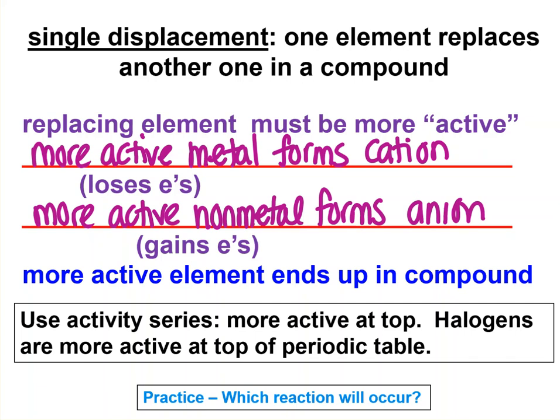And normally, the anion and cation that are formed are in a compound. So how do we know which element is more active? Well, it's not simple. For halogens, it's fairly simple that higher on the periodic table is more active, like fluorine is the most active halogen. But for the metals, it's pretty complicated. And so we have activity series lists that tell us which one's more active.